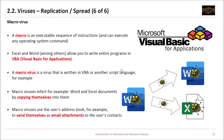Then we have the macro virus. A macro is an executable sequence of instructions that can execute any operating system command — very powerful but also very dangerous. An example is Microsoft Visual Basic for Applications (VBA). Excel and Word allow you to write entire programs in VBA, and a macro virus is written in VBA or another script language. A macro virus infects Word and Excel documents by copying itself into them, and also uses the user's address book to send itself as email attachments to contacts to spread further.